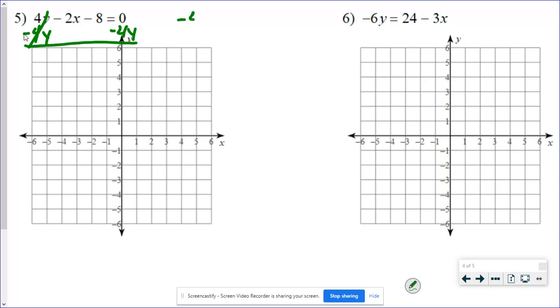So I'm going to put the negative 4y first. Negative 4y equals negative 2x minus 8. And then I'm going to divide everything by negative 4. Y equals negative over negative is a positive 1/2 x. Negative 8 over negative 4 is positive 2.